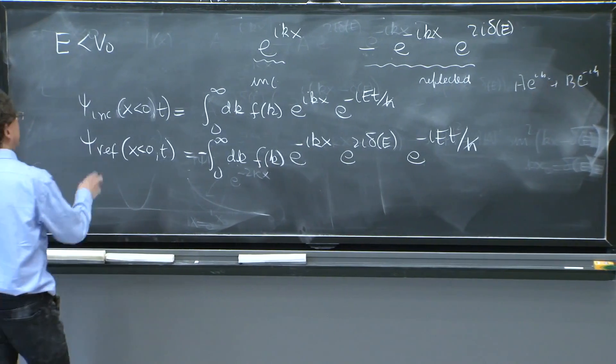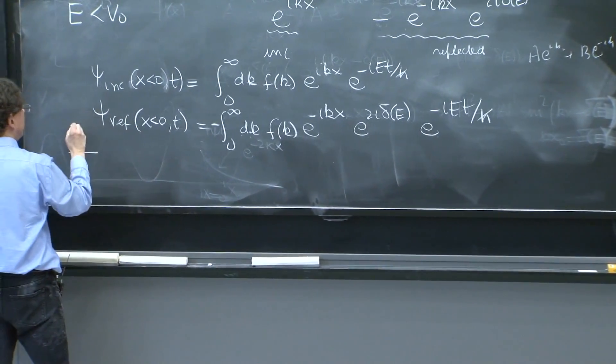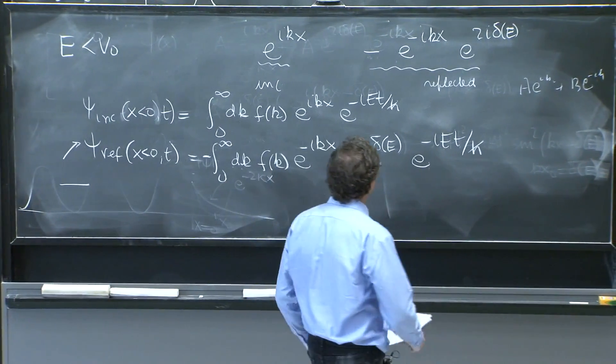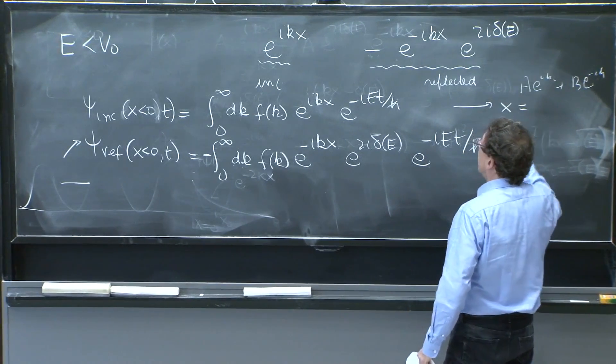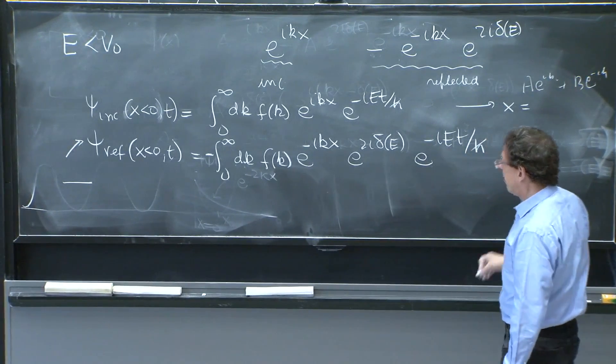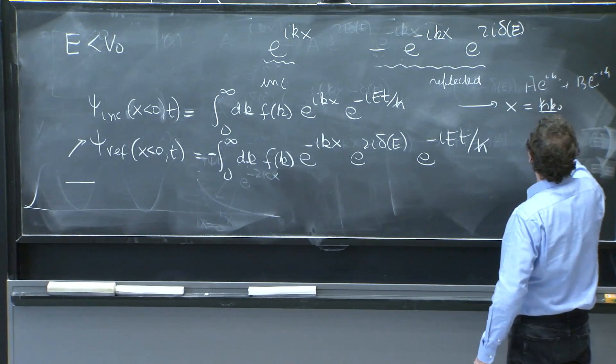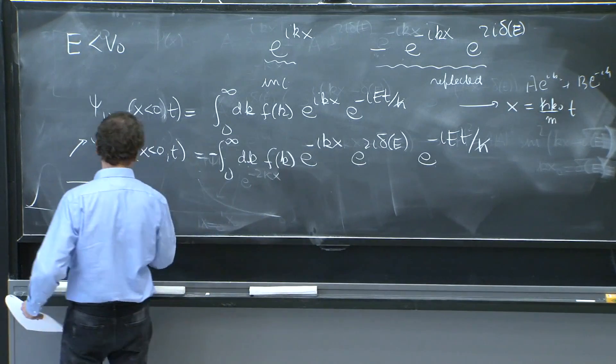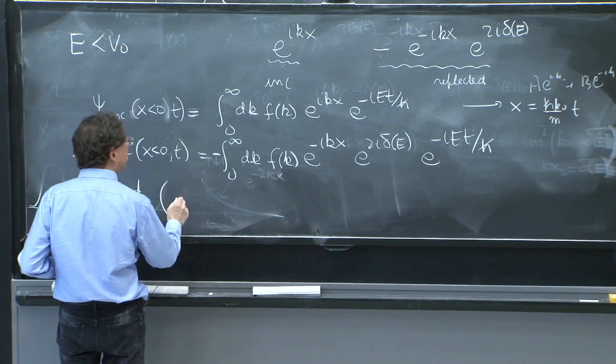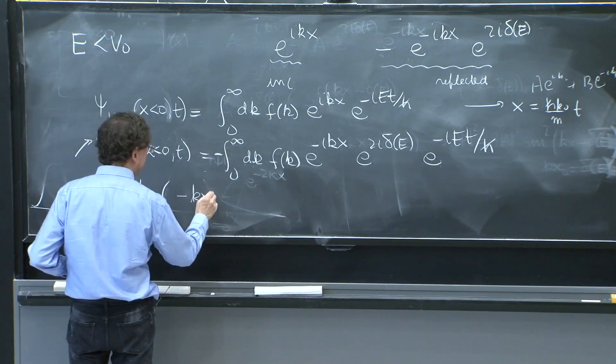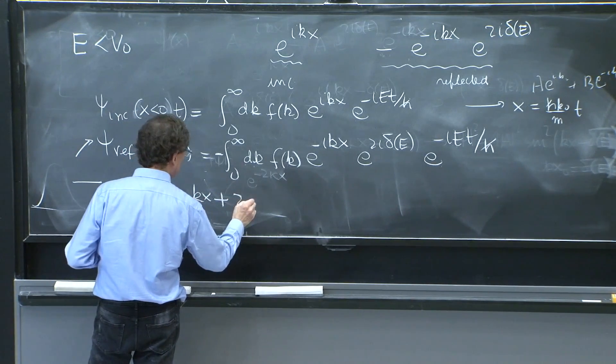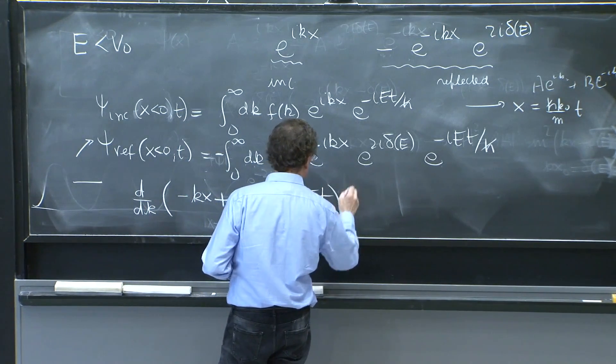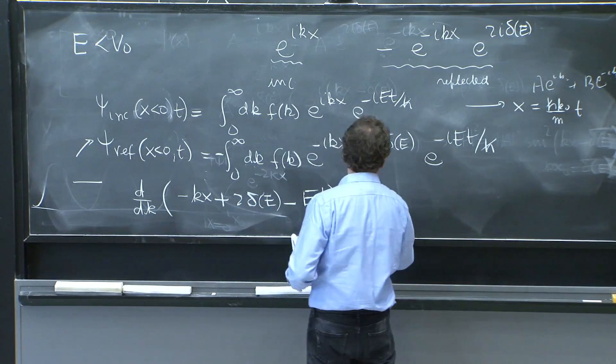So let's do the stationary phase for this one, for the reflected. Let's see how it moves. We know how the incident moves. The incident moves with x equals, we've done it there, hk0 over mt. But how about this one? Well, this one you would have to do d/dk of minus kx plus 2 delta of e minus et over h bar, all that at k0 equals 0.